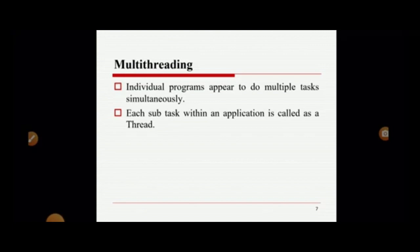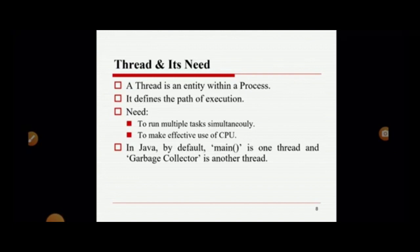What is multi-threading? The individual program appears to do multiple tasks simultaneously. Each sub-task within an application is called a thread. A thread is an entity within a process that defines the path of execution. The need for threads is to run multiple tasks simultaneously to make effective use of the CPU.